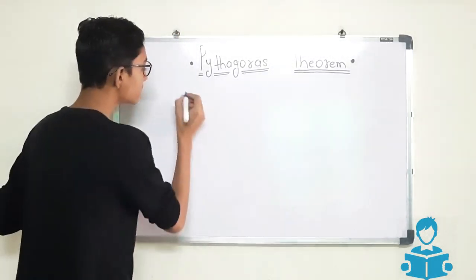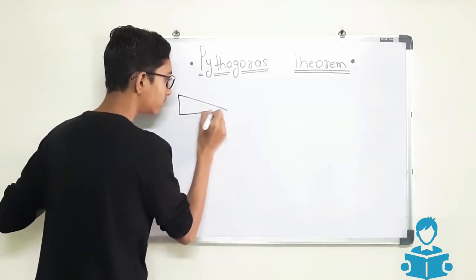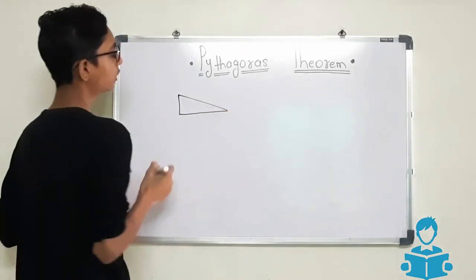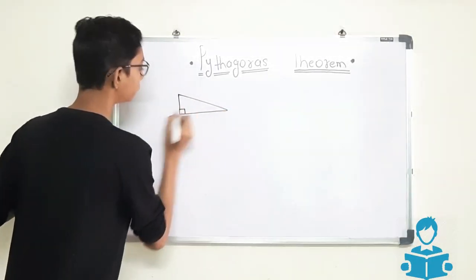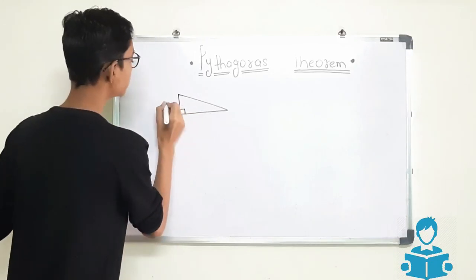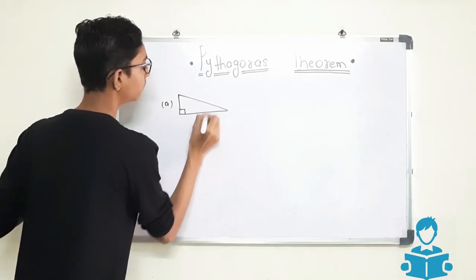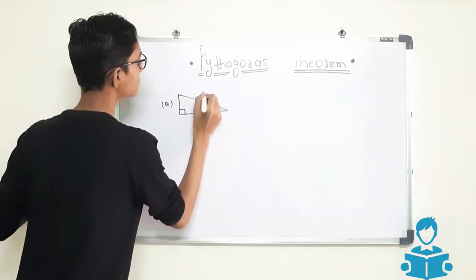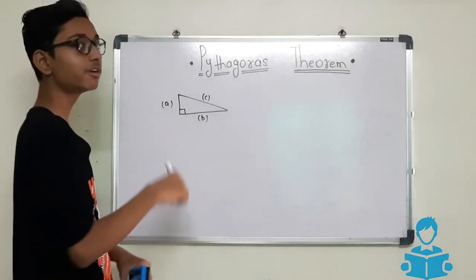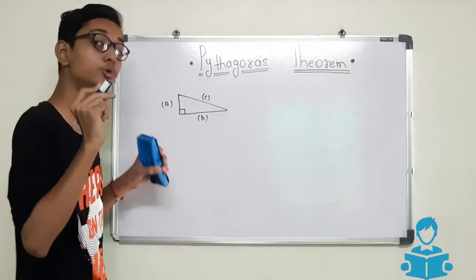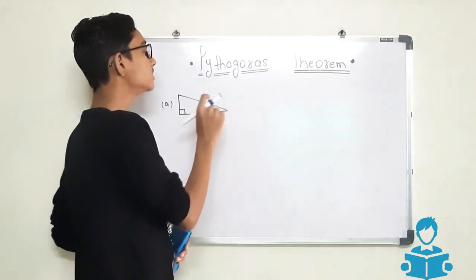This Pythagoras theorem is used in a right angled triangle. You have a right angled triangle. In this, this is A, this is B and this is C. You know the value of A and B, but you don't know the value of C.